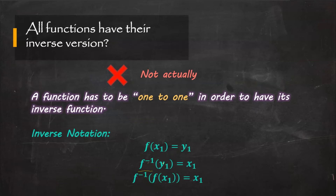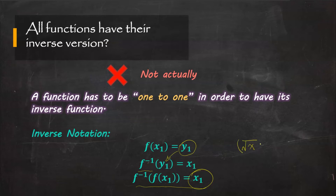If we plug in y₁ = f(x₁), then we will have the equation f⁻¹(f(x₁)) = x₁. This is pretty much like the radical and the square root — if we have a square root of x and then do a square, the square will cancel out the square root, which gives us x. So this is a similar concept.